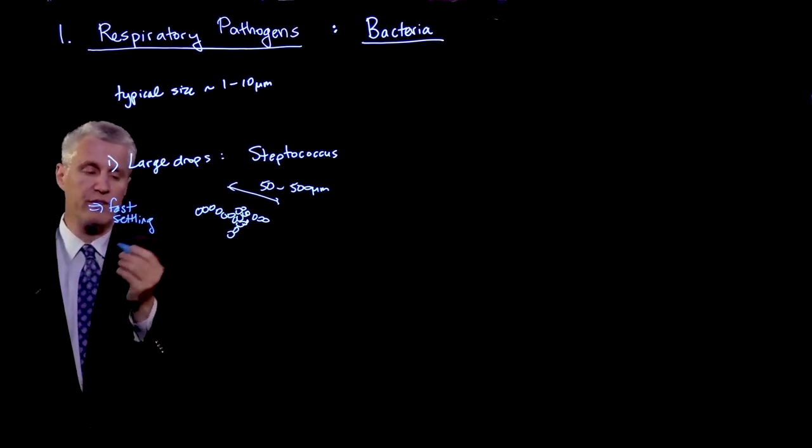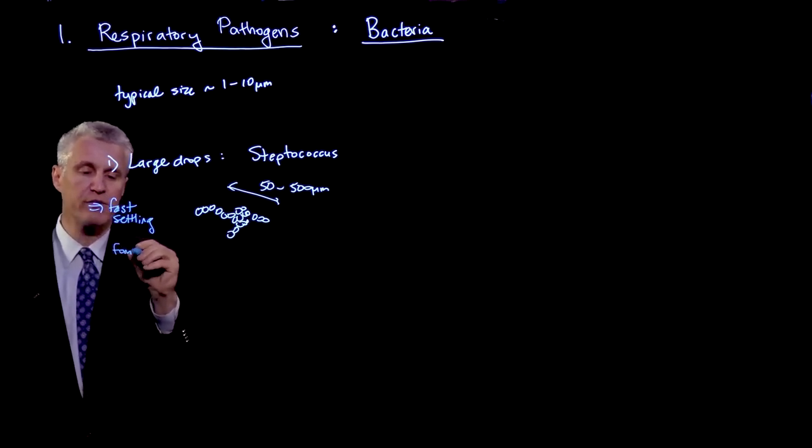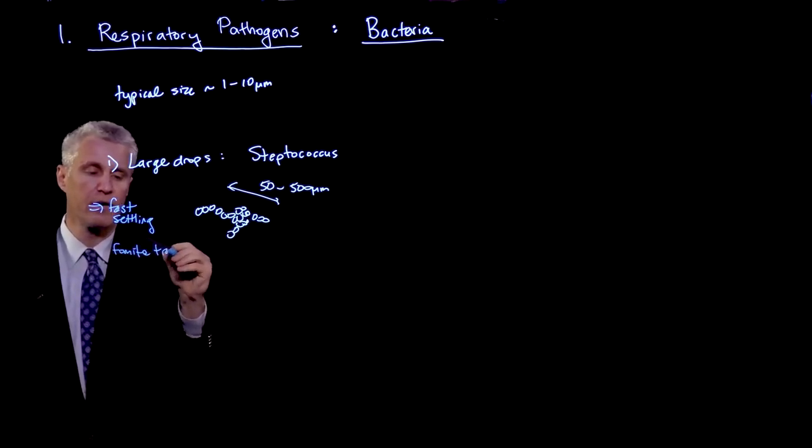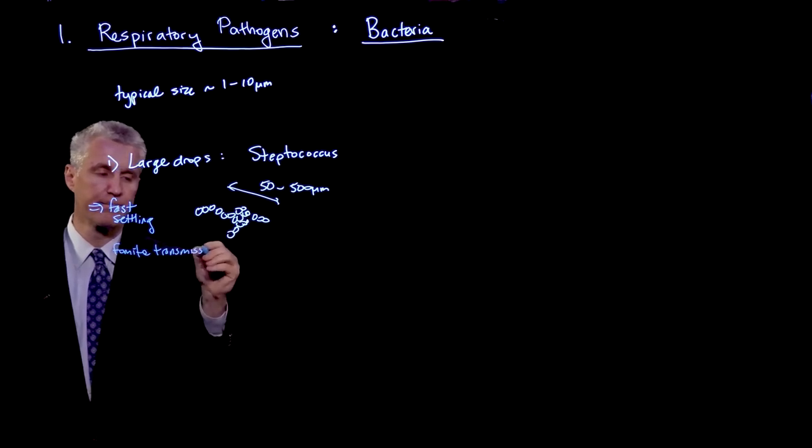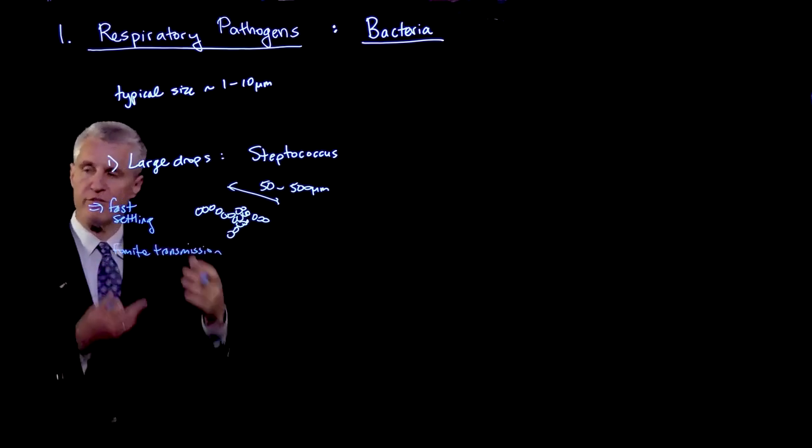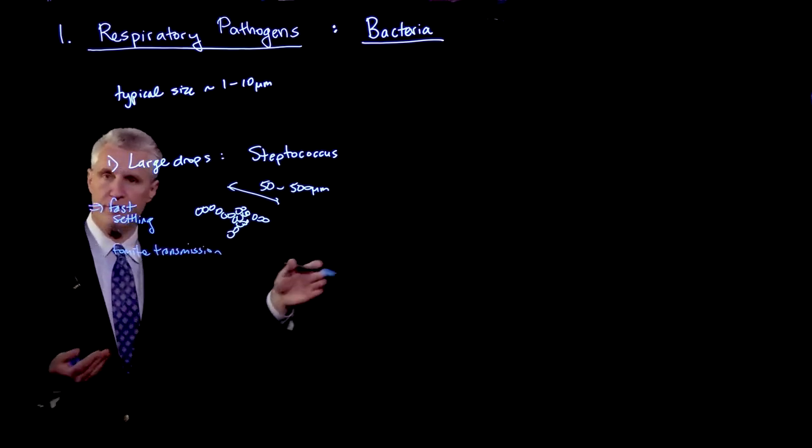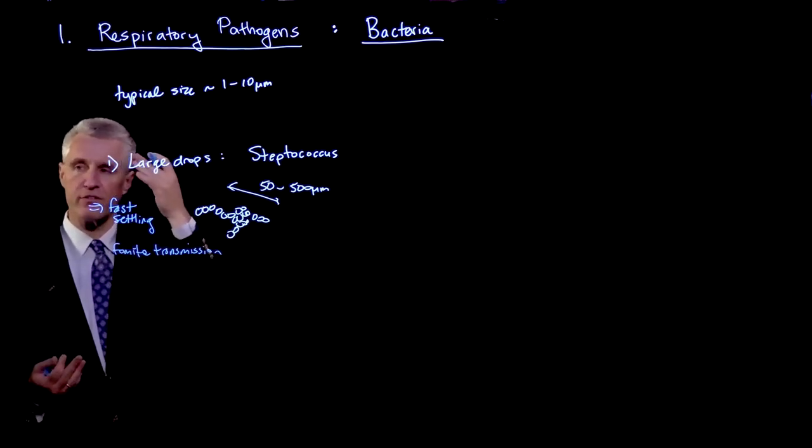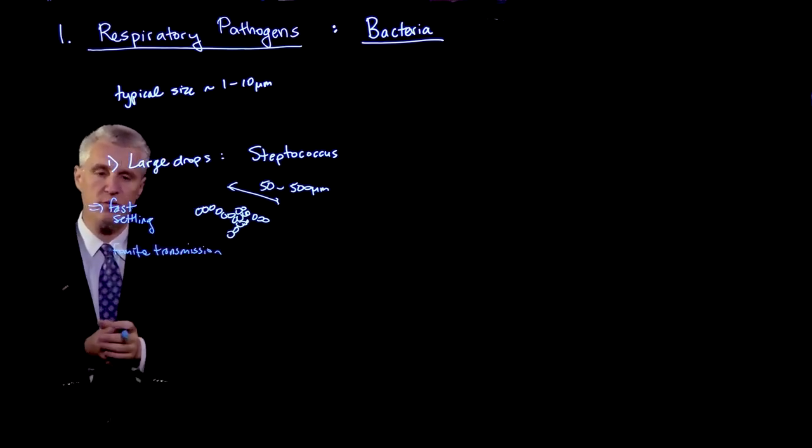And so they're fast settling. And so what that means is that we have either fomite transmission, where those droplets settle on the ground or on some other surface. Somebody touches that surface, touches their eyes. And so that's one method of transmission.